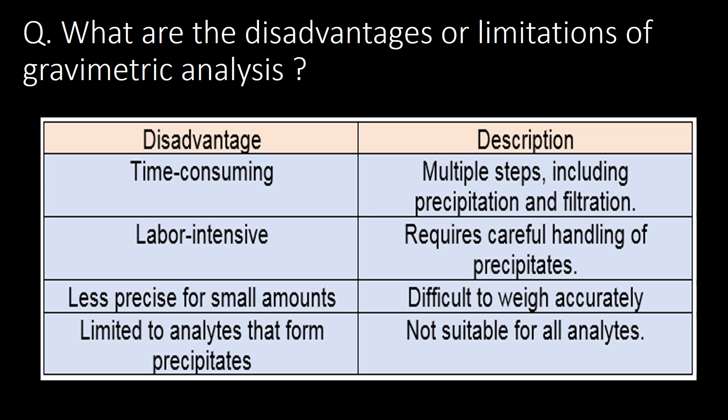What are the disadvantages or limitations of gravimetric analysis? First: gravimetric analysis technique is time-consuming as it involves multiple steps including precipitation and filtration. Second limitation: labor intensive — gravimetric analysis requires careful handling of precipitates. Third limitation: this technique is less precise for small amounts. Fourth limitation: this technique is not suitable for all analytes as it is limited to analytes that form precipitates.